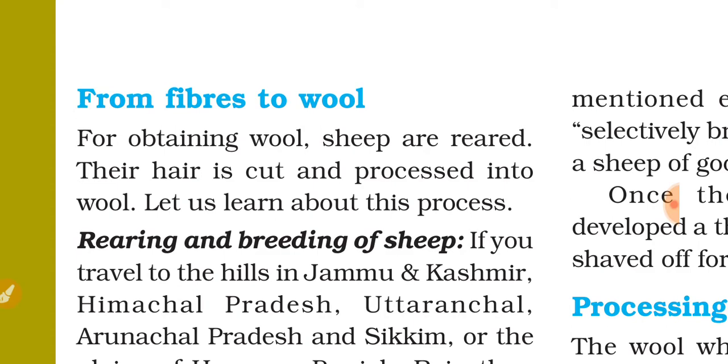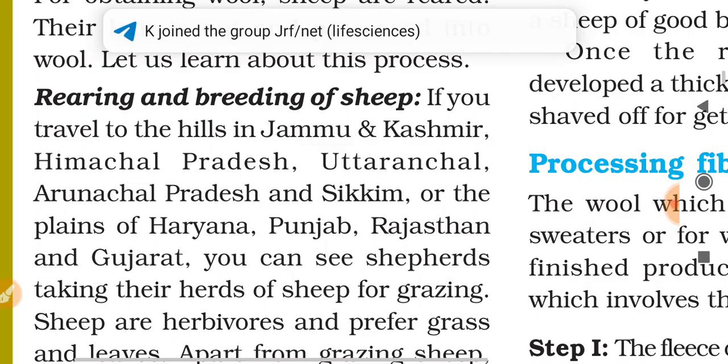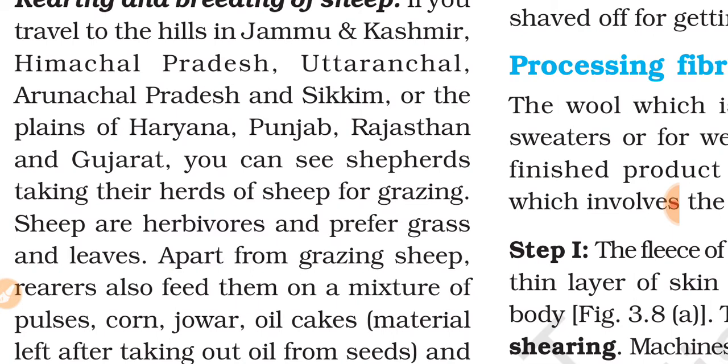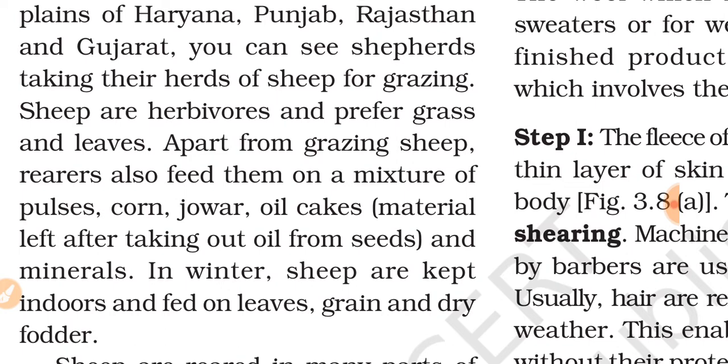Now let us read about how fibers are converted into wool. For obtaining wool, sheep are reared; their hair is cut and processed into wool. If you travel to hills in Jammu and Kashmir, Himachal Pradesh, Uttarakhand, and Sikkim, or to the plains of Haryana, Punjab, Rajasthan, and Gujarat, you can see shepherds taking their herds of sheep for grazing. Sheep are herbivores and prefer grass and leaves. Apart from grazing, rearers also feed them a mixture of pulses, corn, jowar, oil cakes, and minerals.